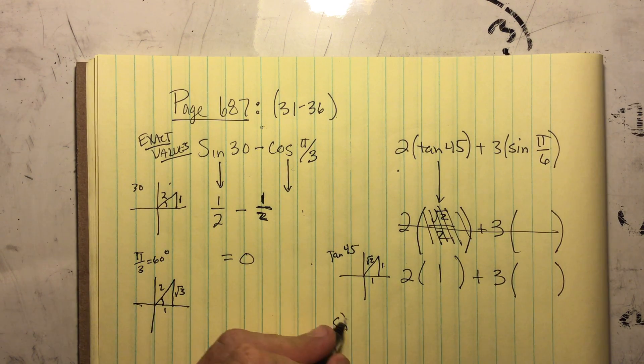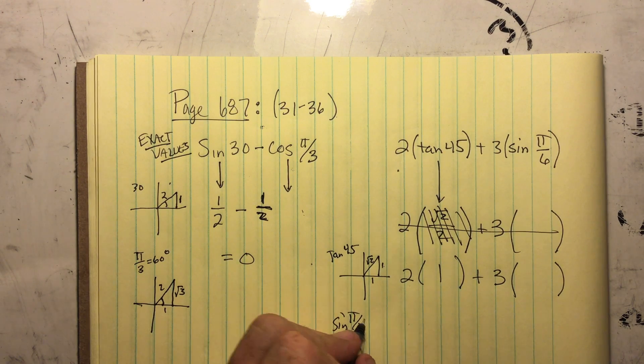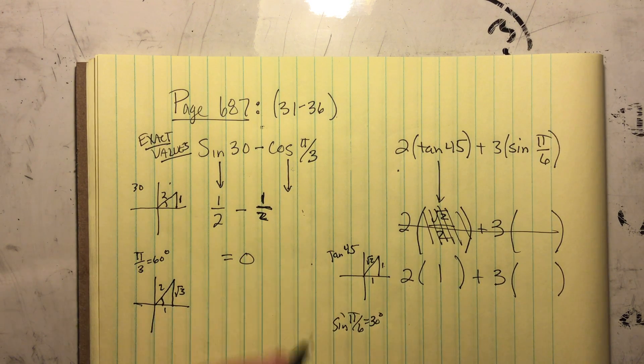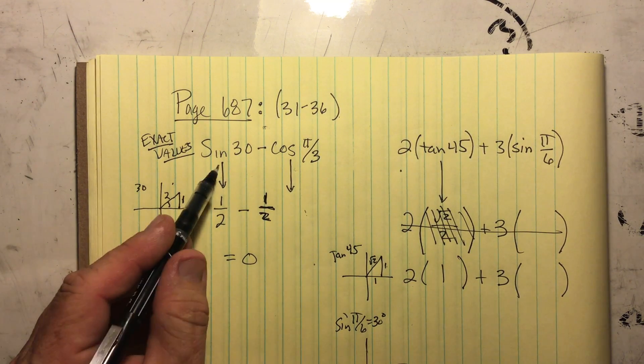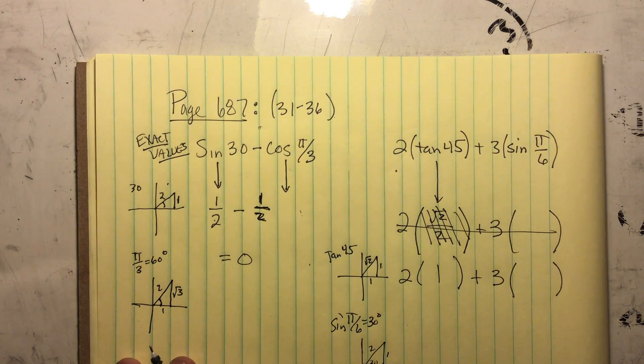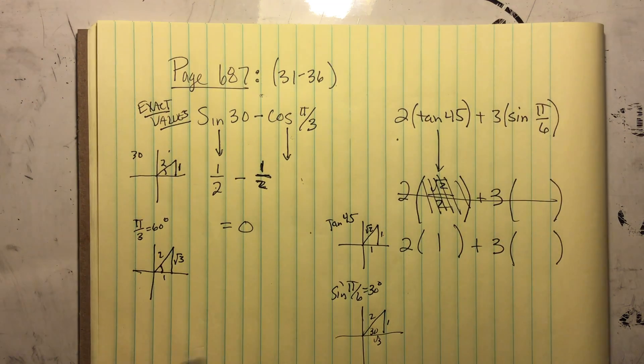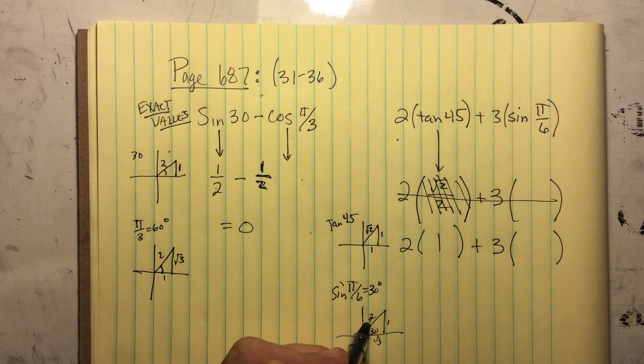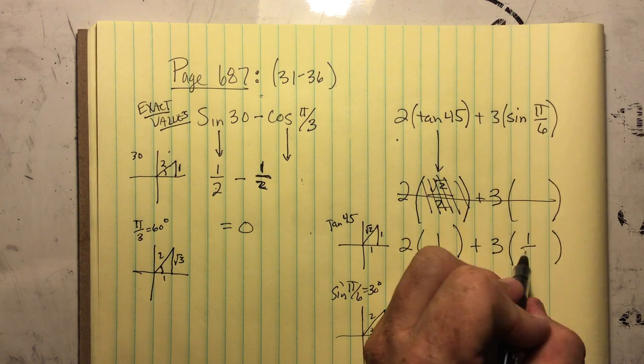The sine of π over 6, which is the same as 30 degrees, is going to be what we just found over here. It's the same as 30 degrees. Opposite side is 1, root 3, and this is 2. Oops, I'm a little low there, sorry. And then opposite over hypotenuse. So this one's 1 half.